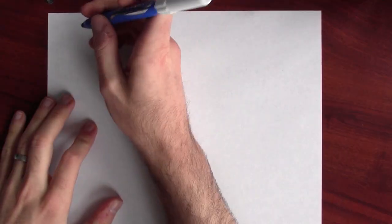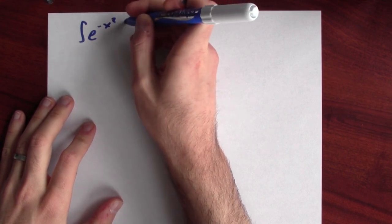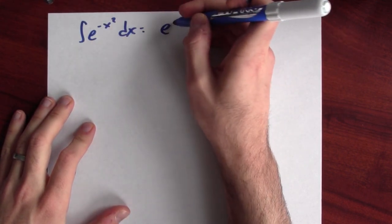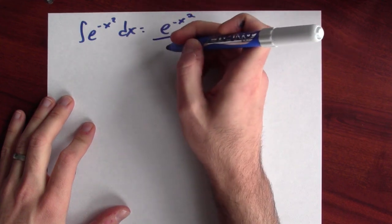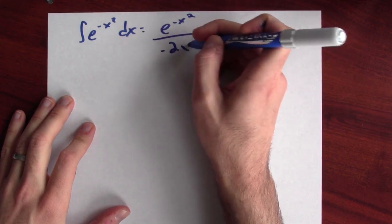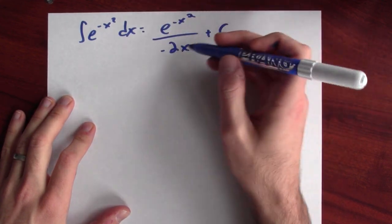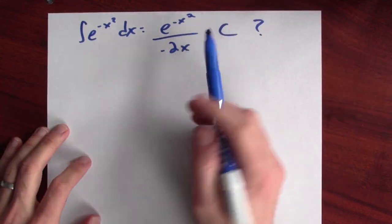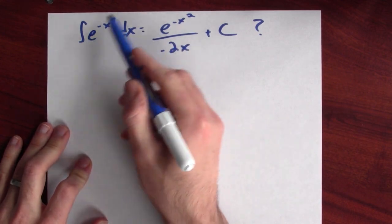Well, let's make a guess and see if our guess is correct. Maybe an anti-derivative of e to the negative x squared is e to the negative x squared over minus 2x plus c. Not saying this is correct, but it could be true. If this were the case, I can check it — I can differentiate this side and see if I get this.